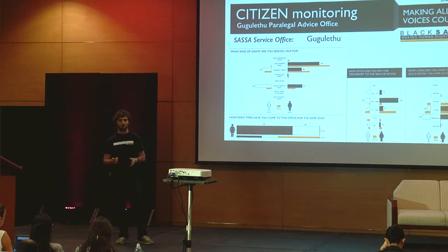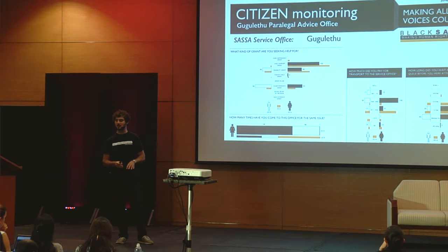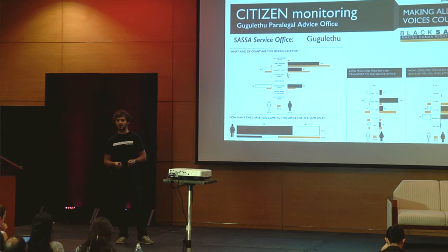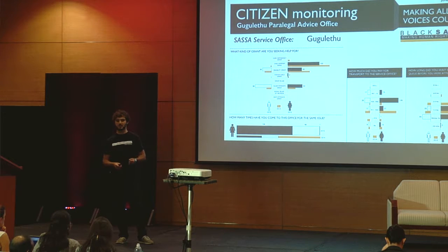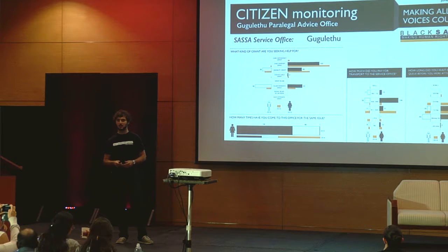We present the data in a way that is consumable by the community and then we print paper posters, because people in these communities usually don't have access to the internet. We take the data they've collected back to that community, and then that community is facilitated — with government — to figure out the most critical issues to address in this monitoring cycle. They identify who's responsible for taking those actions, and a year later they perform the same monitoring again to see if those actions had a useful impact. That's a model developed by Black Sash over quite a few years.